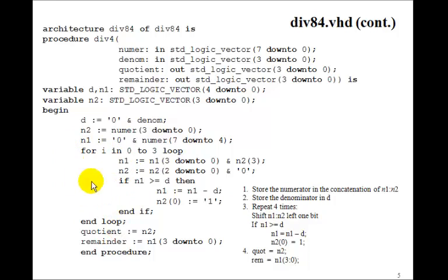Store the denominator in d. And we want to repeat 4 times, so we'll go through this loop, 0 to 3. And we need to shift n1, n2, left 1 bit. So n2, let's shift this one first, n2 gets n2, 2 down to 0, with a leading 0. And then n1 is going to get n1, 3 down to 0, with the uppermost bit of n2 shifted in. So this will have the effect of shifting n1, n2, left 1 bit.